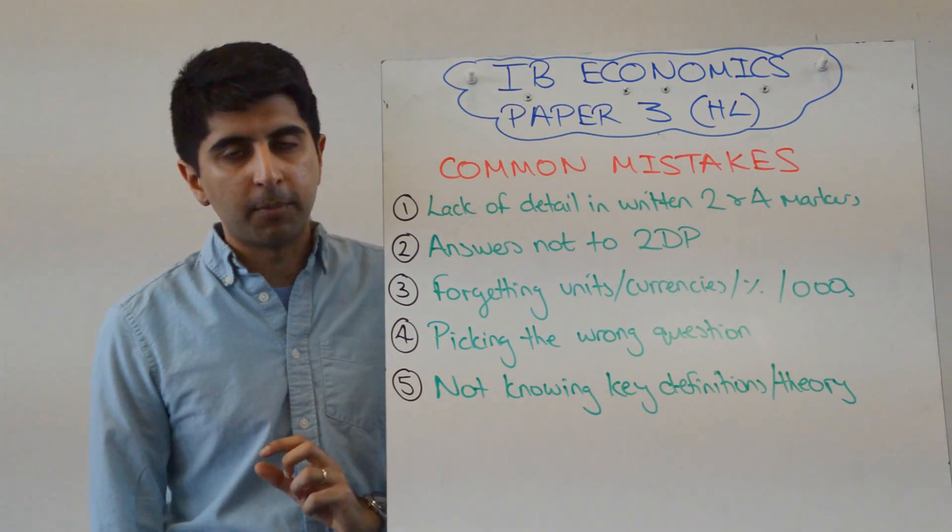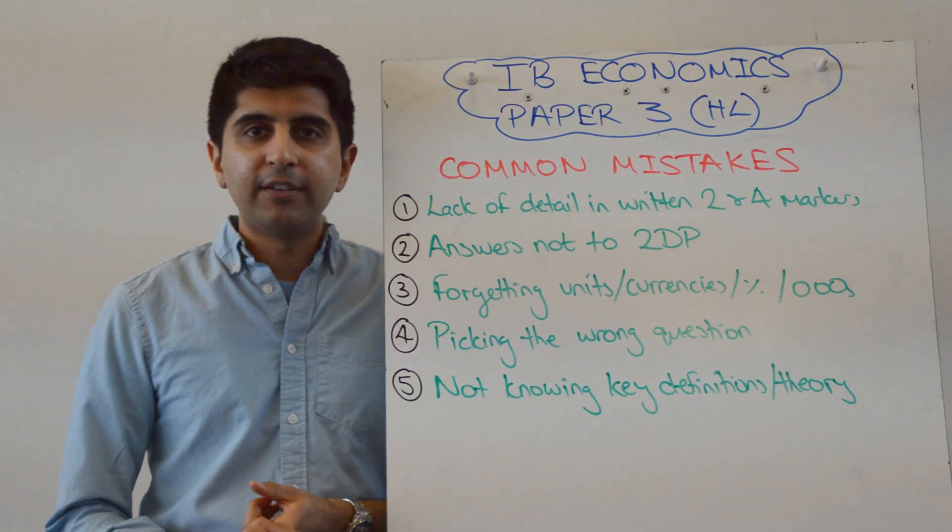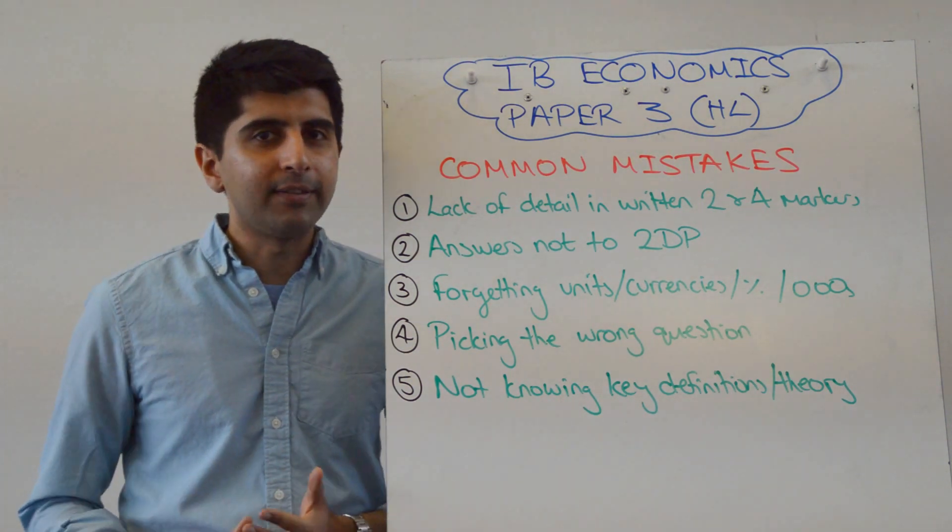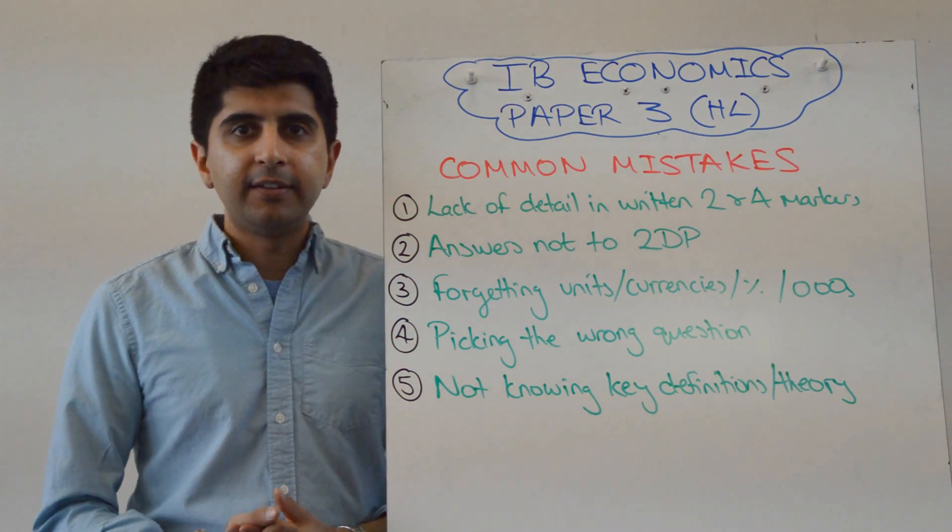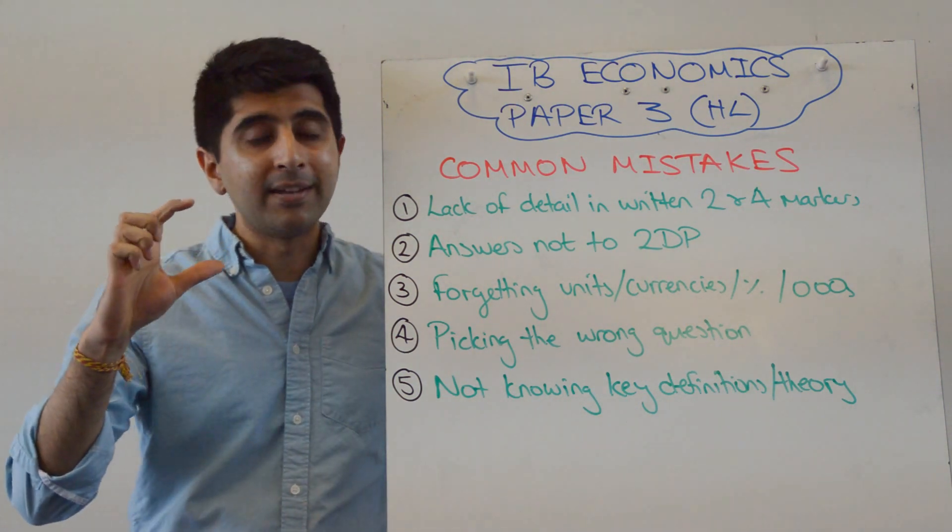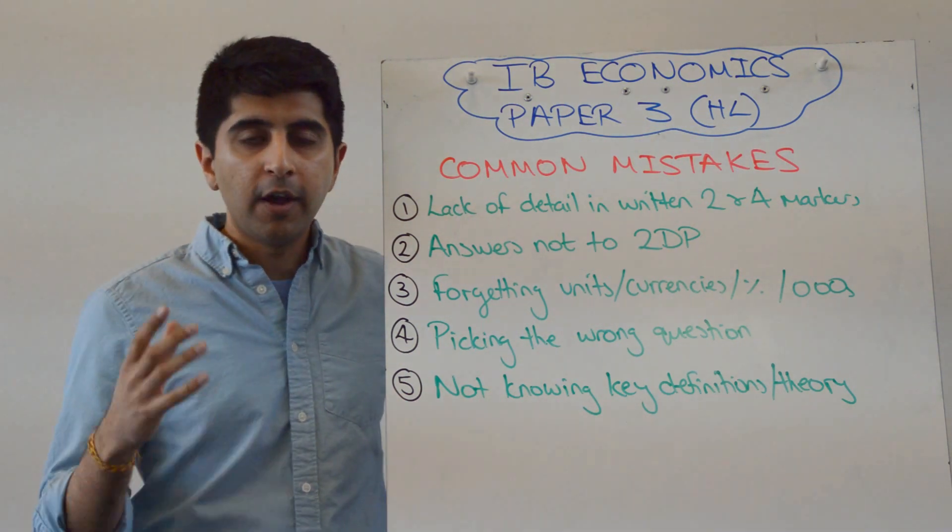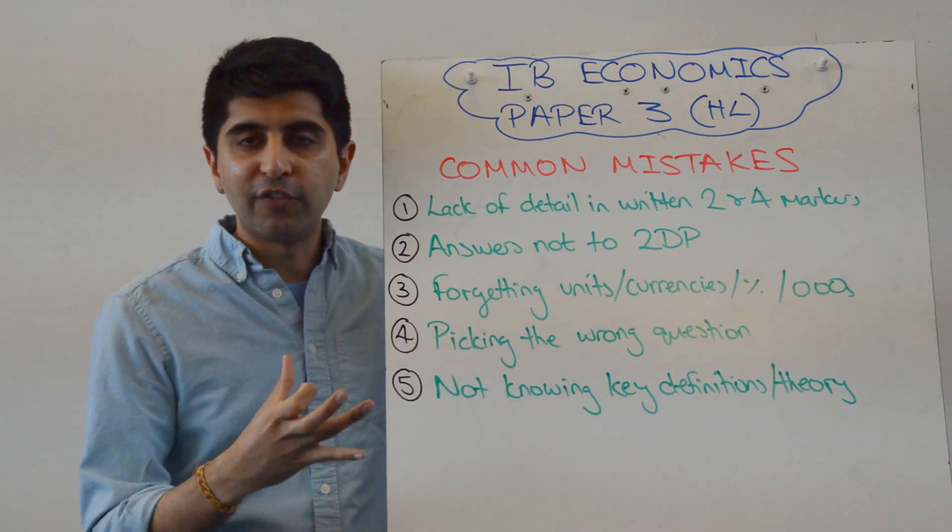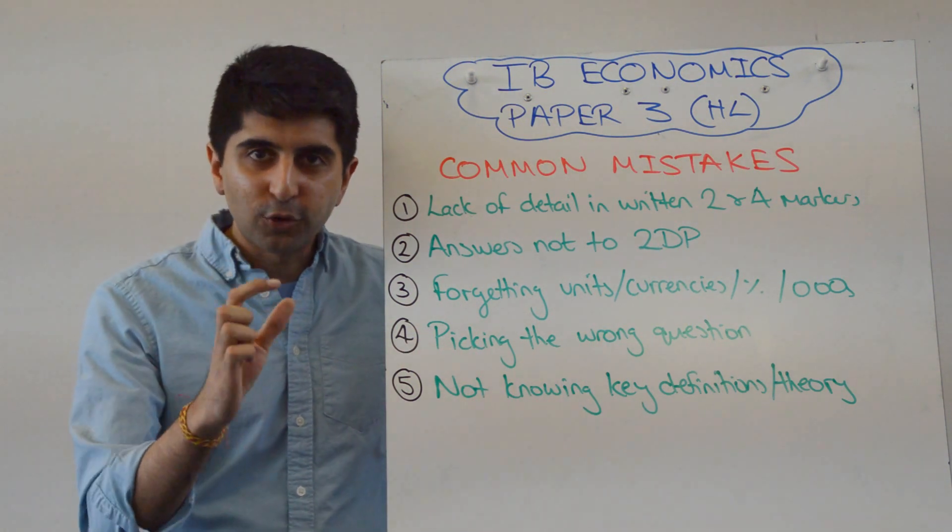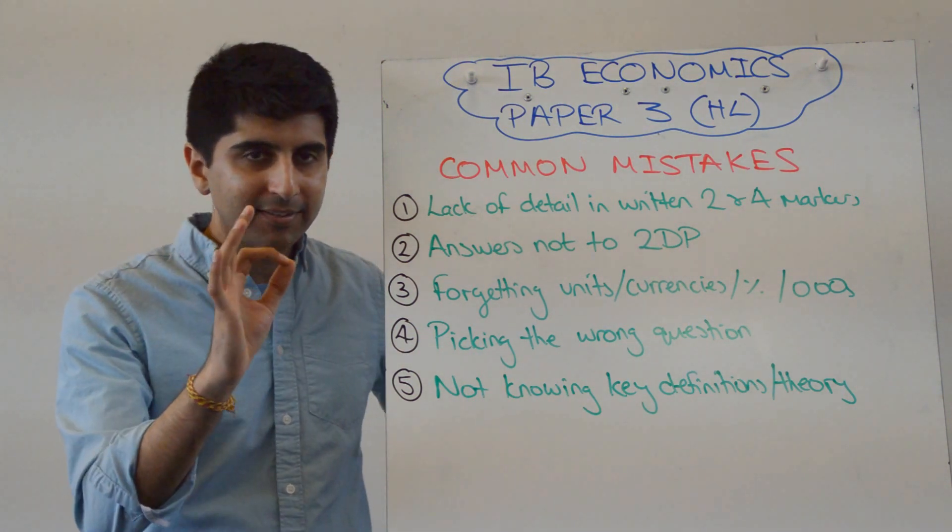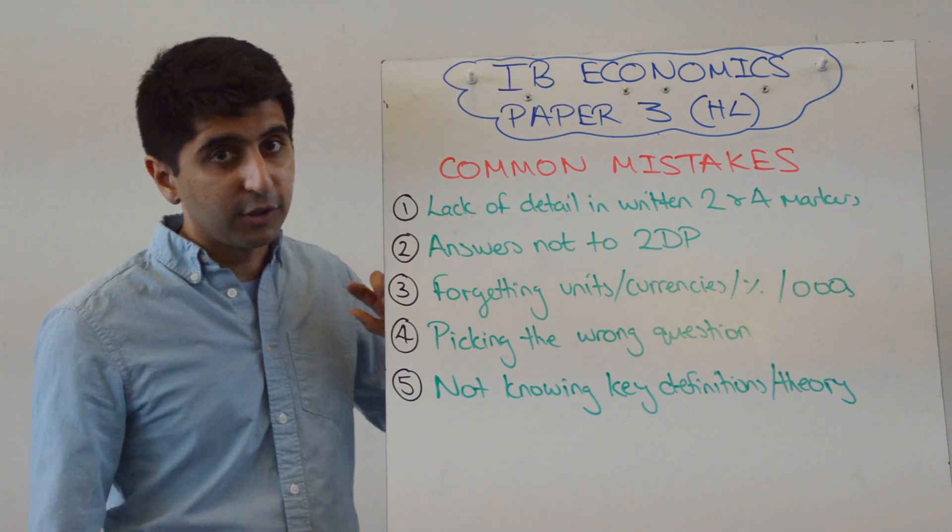Number one is the most common for sure: taking for granted these 2 and 4 markers, being complacent in them and not writing the detail required to get into that higher band to get the maximum marks. By far the biggest mistake. Watch my video on how to answer these written 2 and 4 mark questions to make sure you don't fall into that trap. Max detail. A lack of that can cost you badly.